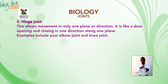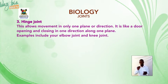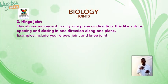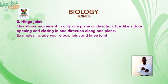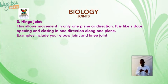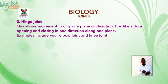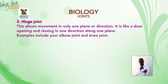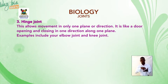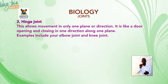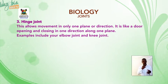Hinge joints allow movement in only one plane or direction. It is like a door opening and closing in one direction along one plane. Examples include your elbow joints and knee joints.